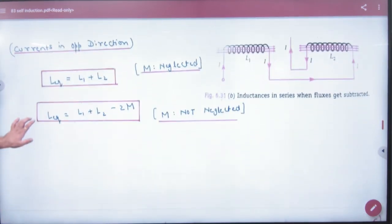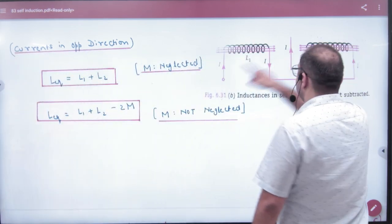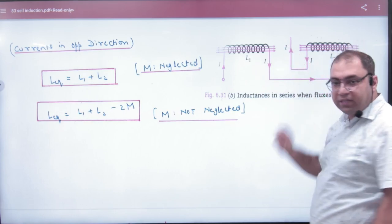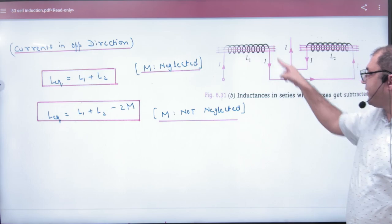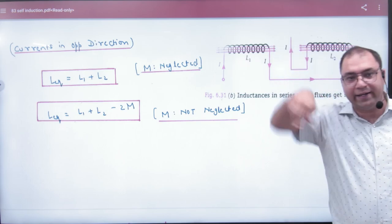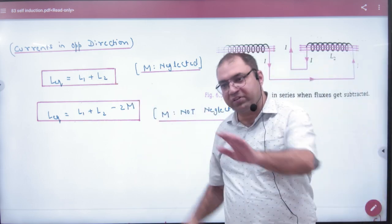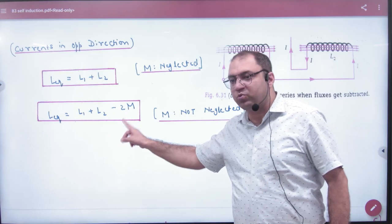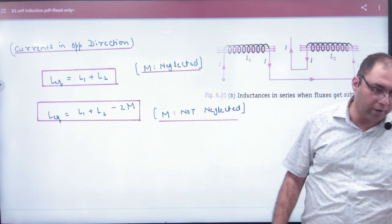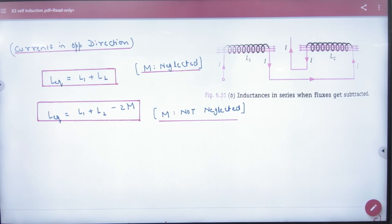But if the inductors are in series and the current is in the opposite direction — current is right on one side and left on the other — then the equivalent inductance is L1 plus L2 minus 2M. Note that M is subtracted, not added, in this case.